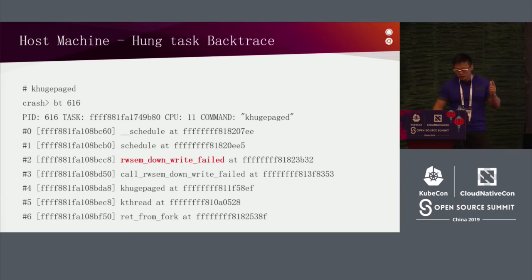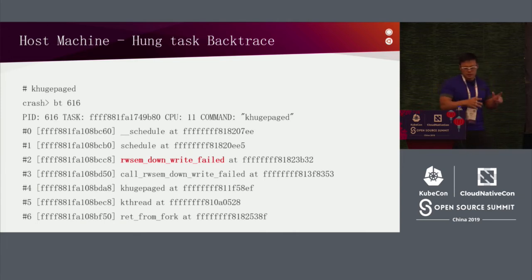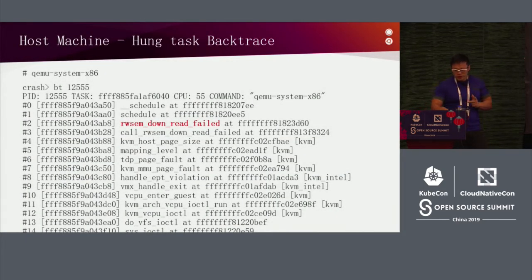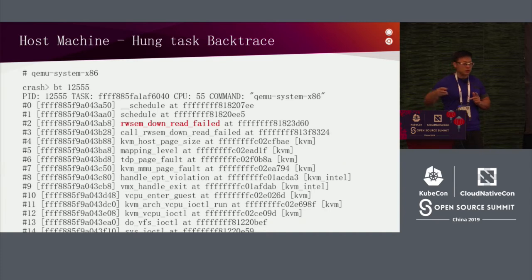When huge pages are enabled and set to 'always', khugepaged continuously scans and merges four 4K pages into a single huge page (two-level PDE). While screening these pages it gets stuck on KSM. The third victim is KVM (the virtualization layer) — call-and-enter instructions going into the guest encounter a VMSC event, and the last-page handling of the VM is involved.